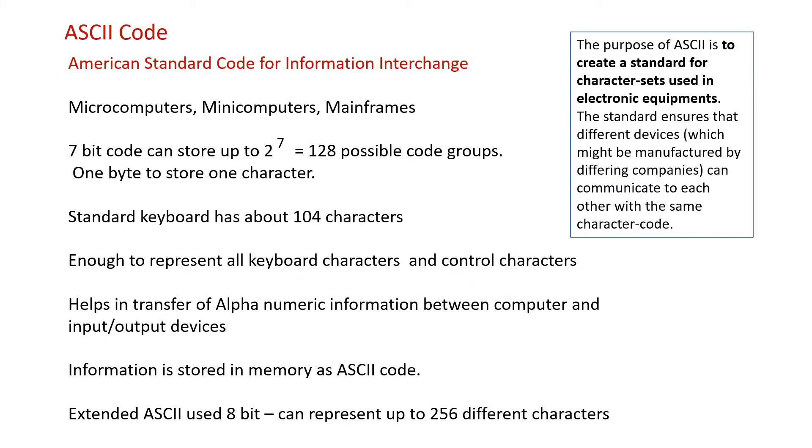Now we will have a look at the first encoding scheme, called the ASCII code. The full form of ASCII is American Standard Code for Information Interchange, and this is used in microcomputers, mini computers, and mainframes. This is a 7-bit code and it can store up to 2 to the power 7, 128 possible code groups. Pretty much we can say that it takes up 1 byte, and in this case we know that 1 byte is 8 bits.